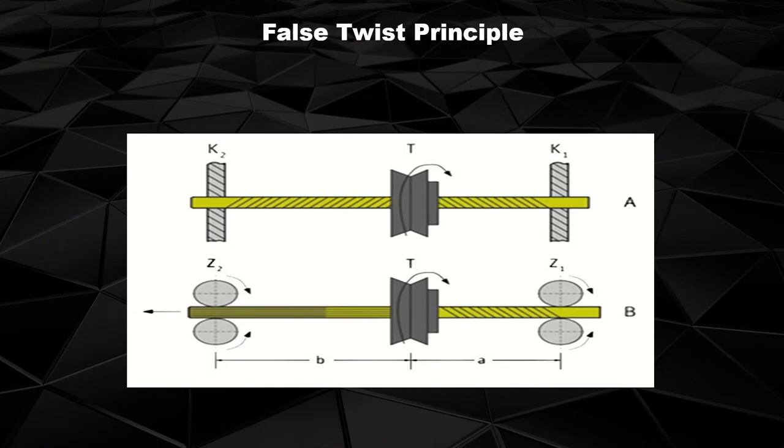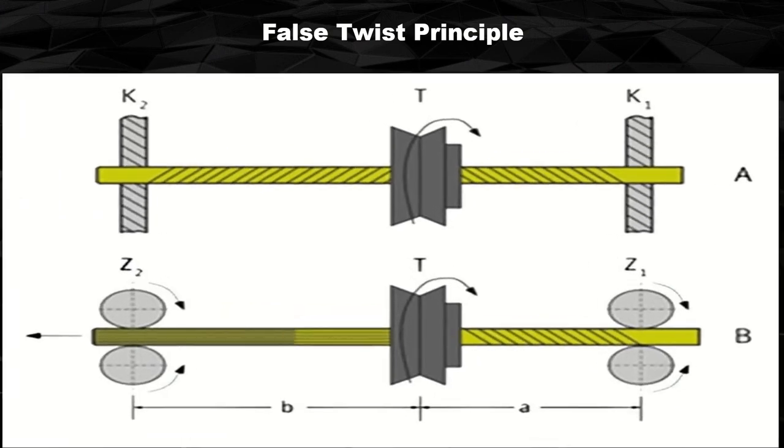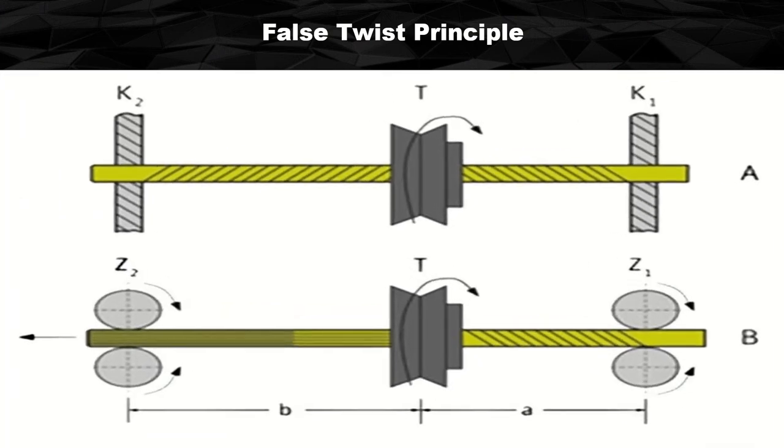The principle of false twist: when a fiber strand is clamped between two points K1 and K2 and twisted clockwise somewhere in between, this imparts S-twist on the left side and Z-twist on the right side. If the two clamps are replaced by two rotating cylinders Z1 and Z2, and yarn is allowed to pass through while twist is being imparted, the S-twist in the left section is cancelled by Z-twist in the right section. Ultimately, no twist takes place between the twist element and delivery roller. That's why false twist is also called self-canceling twist.